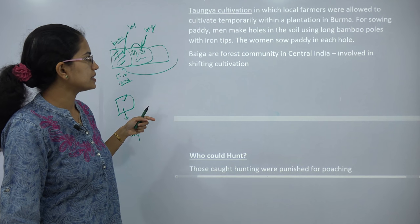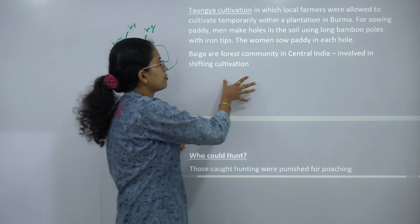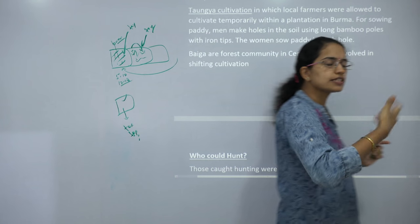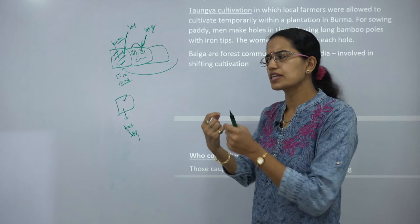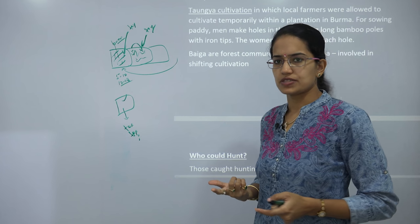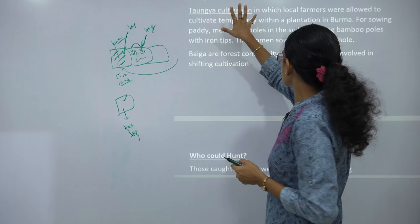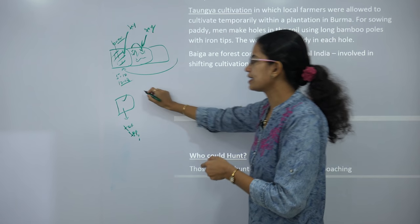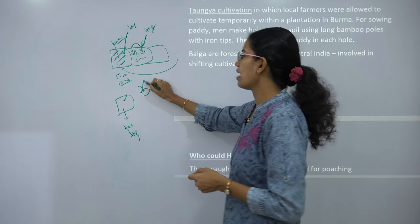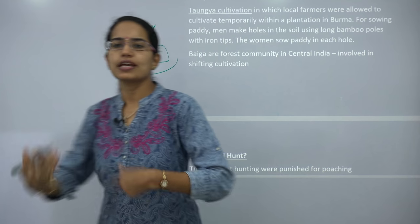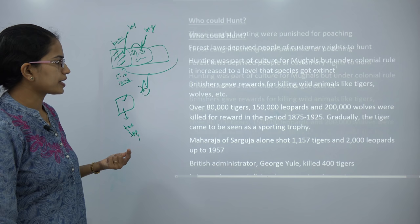Britishers found this system of shifting cultivation very difficult for collecting taxes, and that was one reason they were promoting plantation cultivation, where it became much easier to tax the land and collect land revenue. Different communities were involved in shifting cultivation with different cultivation patterns. For example, Tongya cultivation is a practice where the man digs the hole and the female puts the seed there, and then the plantation comes up.